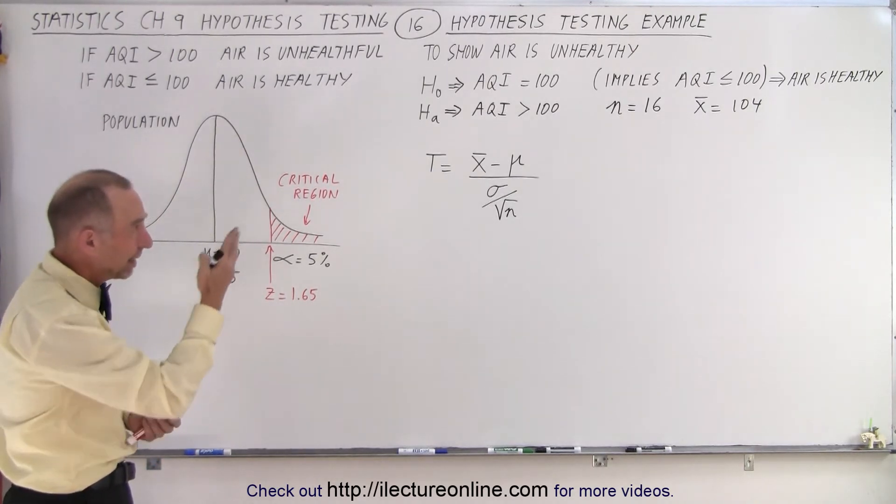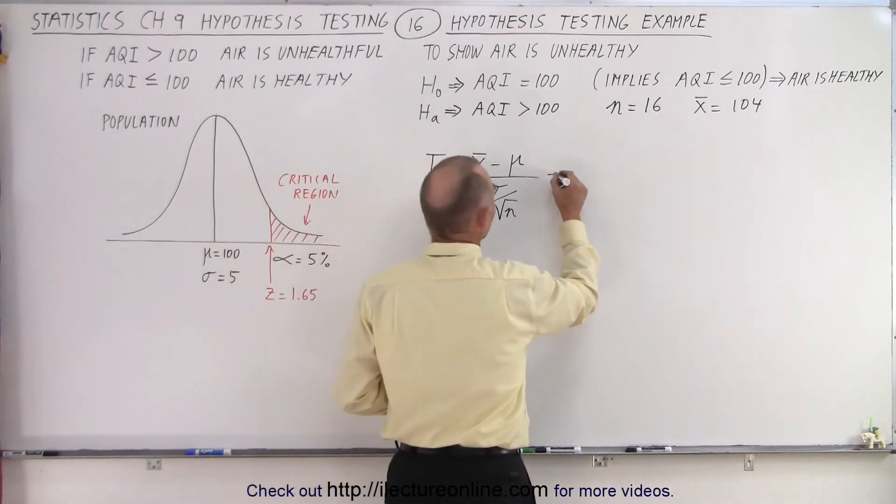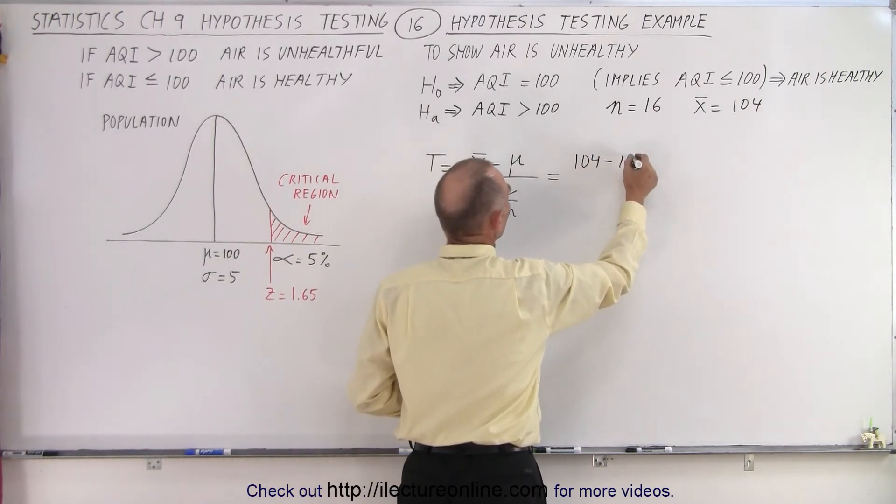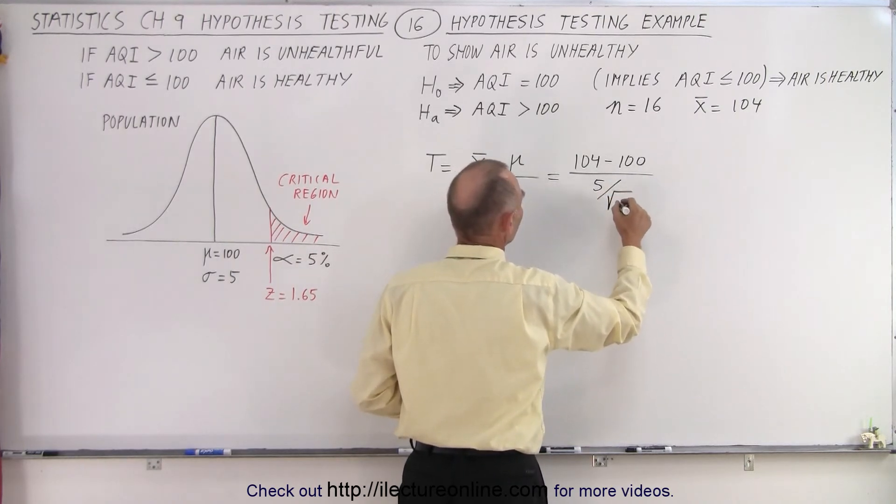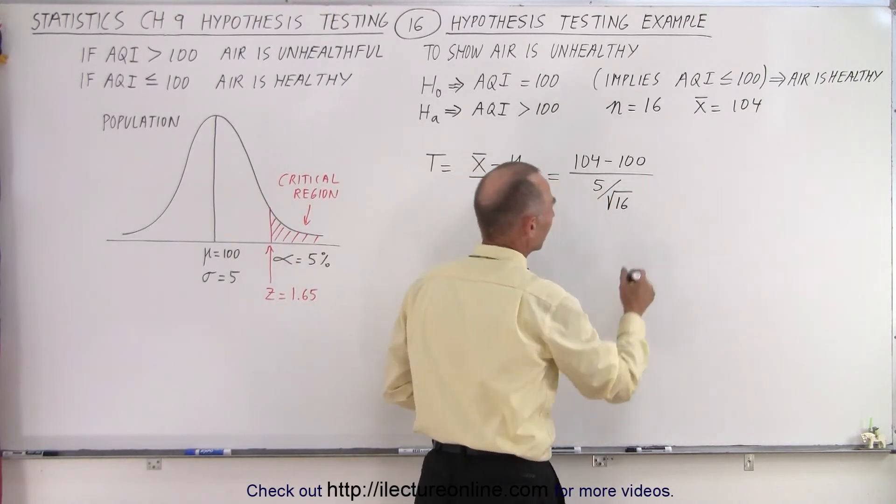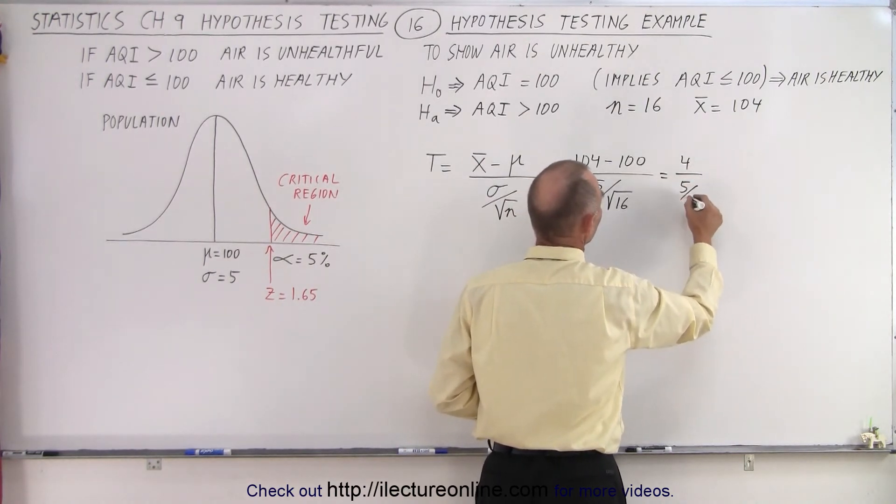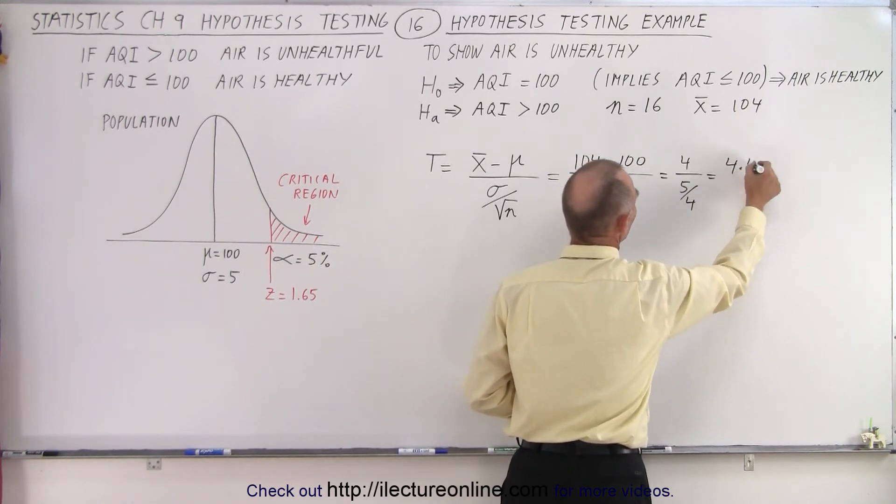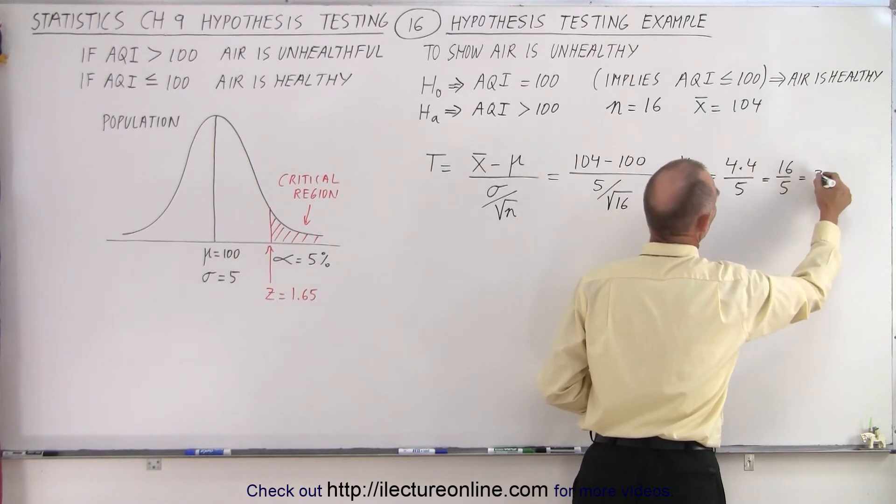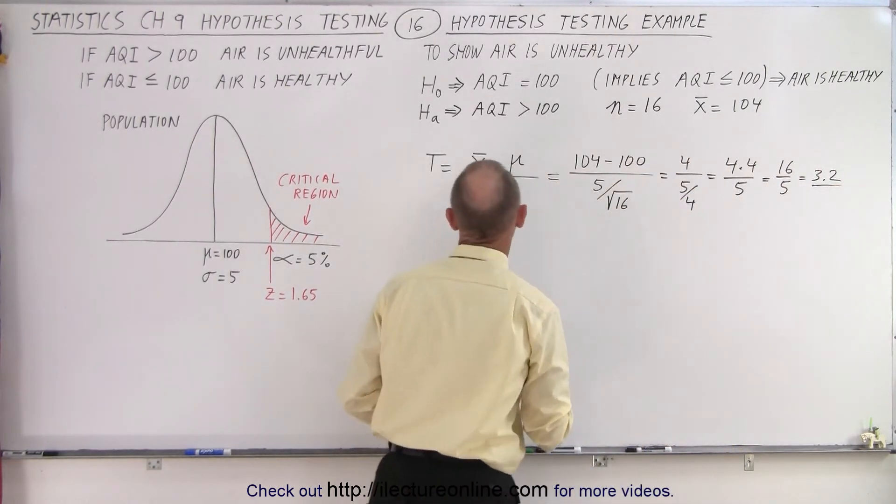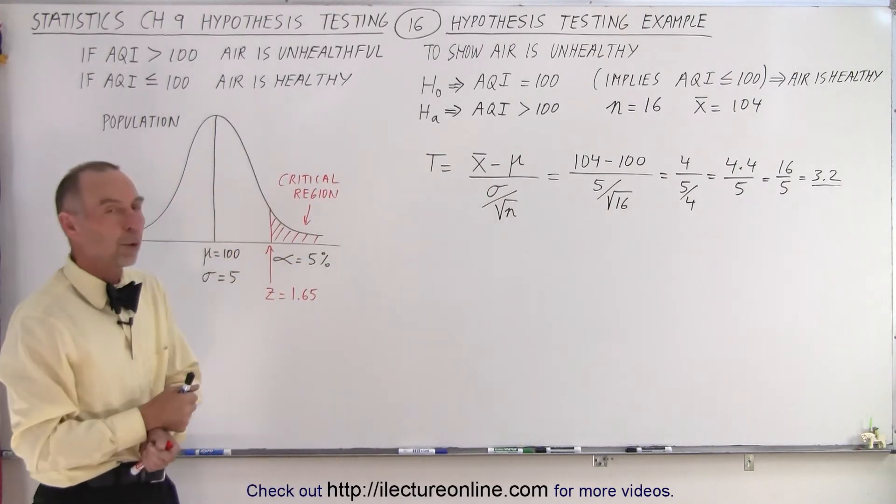So this is equal to 104 minus 100 divided by the standard deviation, which is 5, divided by the square root of the sample size, which is 16. So this becomes equal to 4 divided by 5 divided by 4, and so this becomes 4 times 4 divided by 5, which is 16 divided by 5, which is equal to 3.2. So here we determined that the test statistic is 3.2.